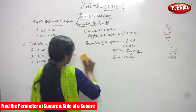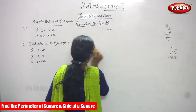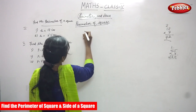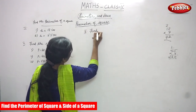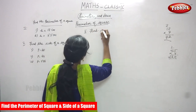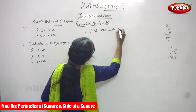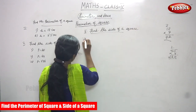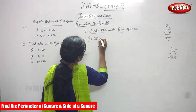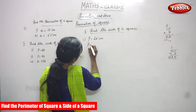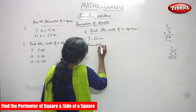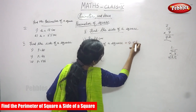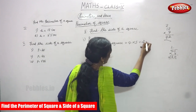Now we are going to do the second subdivision: find the side of a square. This is the heading. So first: perimeter P is equal to 28 cm. What is the formula? The formula for perimeter of a square is 4 into S. So, 4 into S is equal to 28 cm.